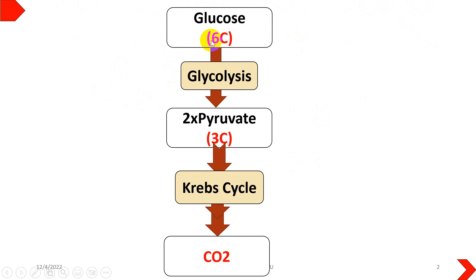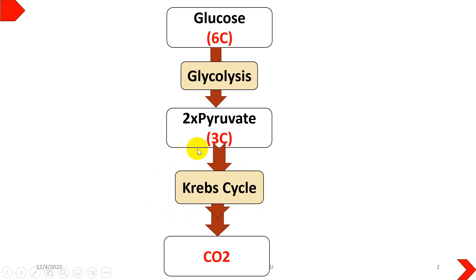We know that glucose, which is a six-carbon molecule, when entered into glycolysis — a 10-step process — it is converted into pyruvate. Two molecules of pyruvate are generated from one molecule of glucose, and that pyruvate, which is a three-carbon molecule, is converted into acetyl-CoA, which then enters the mitochondria and goes into the Krebs cycle, producing carbon dioxide and a lot of energy.